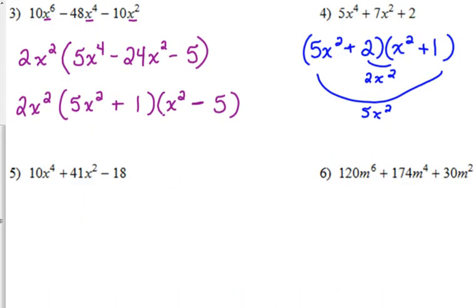Let's do two more together. Number 5. 10x to the fourth plus 41x squared minus 18. It would be great if there was a GCF, but I don't think there is. It's definitely not 10. It's not 5. And it's not 2. The middle is not divisible by 2. So no GCF.